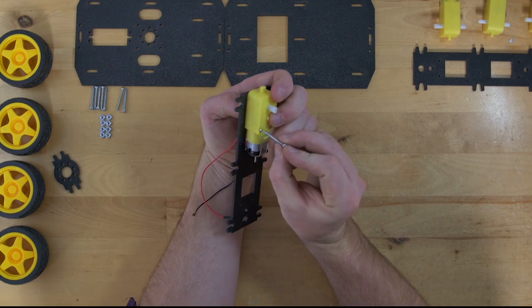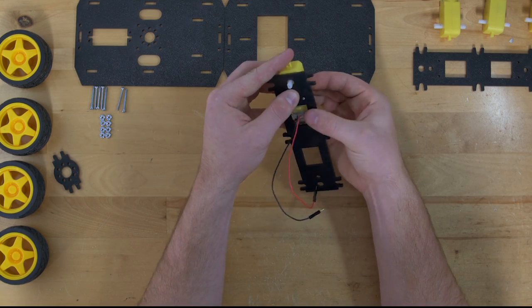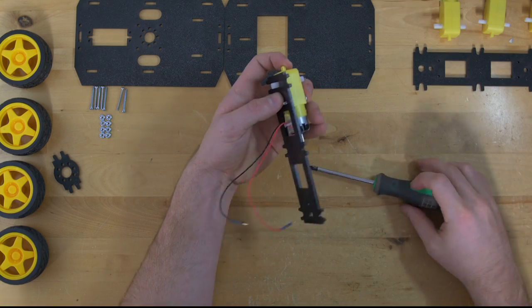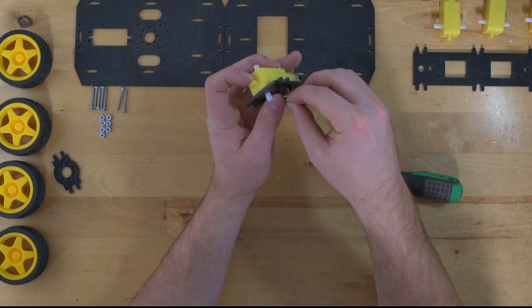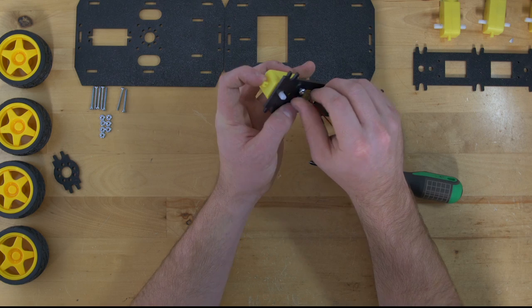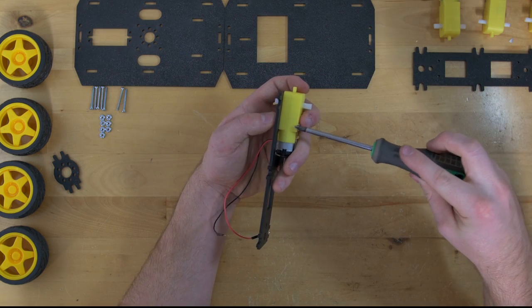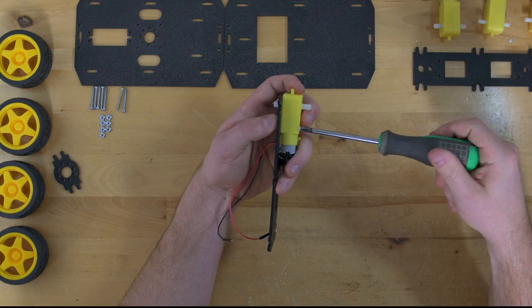Next take your screws and feed them through the holes in your motor and then through the ABS. Screw those in place and then we'll take the nut that comes with your screws and feed that on. Then I'll go ahead and take my screwdriver and just make sure that I got it nice and tight.